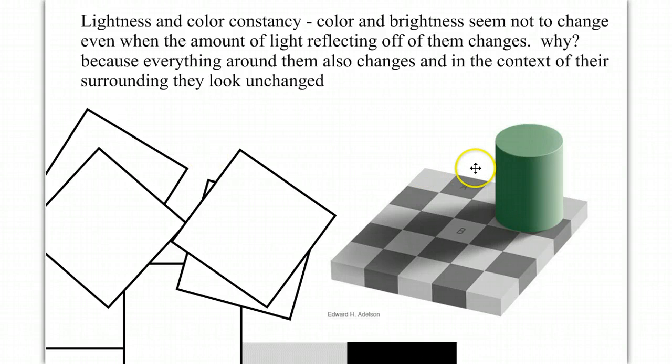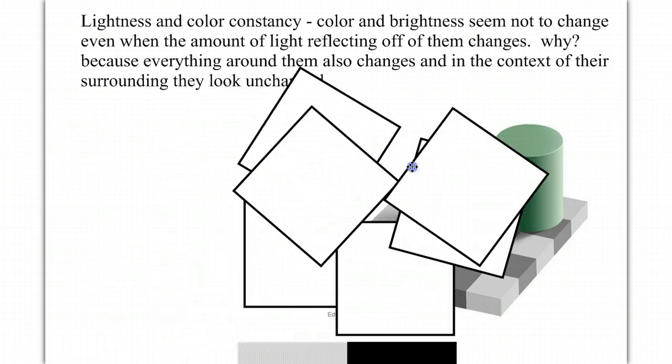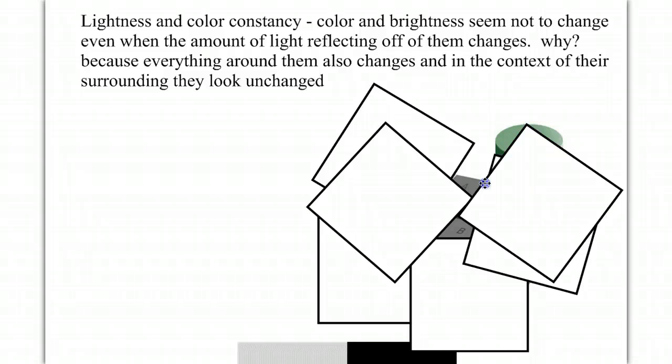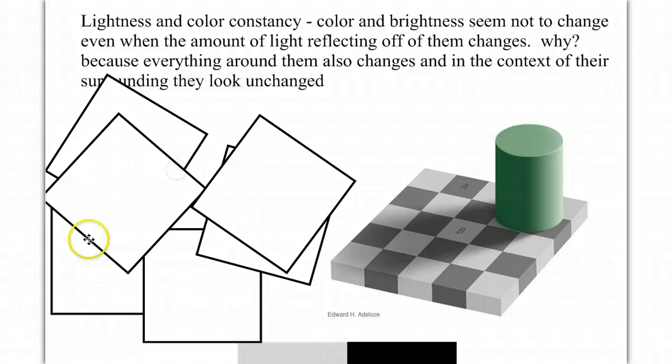But here's a fun little illusion. Look at box A and box B. Do they look the same color to you, the same amount of lightness? What if we cover up the rest of the context? If we take away the surrounding context cues, look how similar they are in color. This isn't a trick. Those two boxes are the same color. But the context cues around them deceive us.